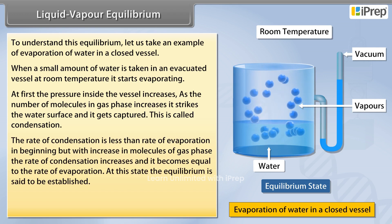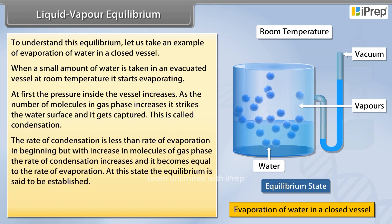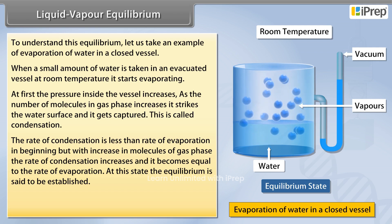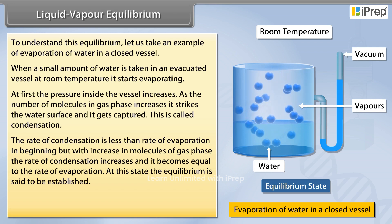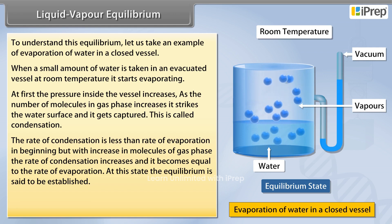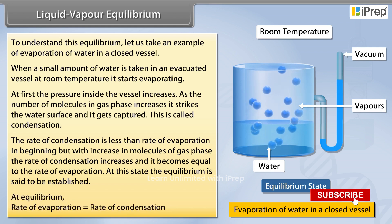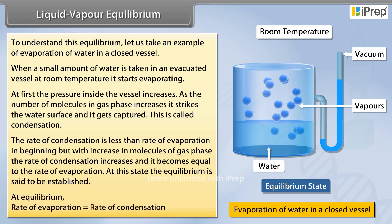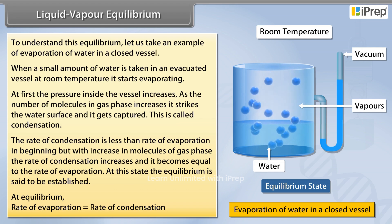But with an increase in molecules in the gas phase, the rate of condensation increases and it becomes equal to the rate of evaporation. At this state, the equilibrium is said to be established. Thus, at equilibrium, the rate of evaporation is equal to the rate of condensation.